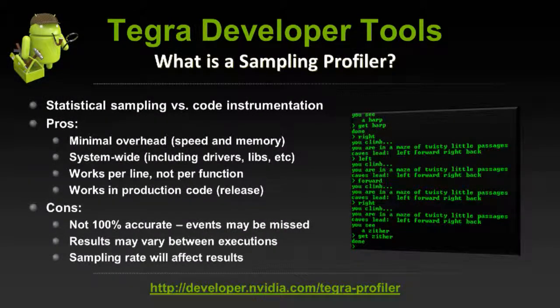The Tegra Profiler is a sampling profiler. A sampling profiler occasionally takes a peek at what's going on in your application. It has really low overhead — it won't cost much in terms of performance or memory. You can look system-wide, so you don't have to look at a single application; you can explore what's going on in DLLs, driver land, and third-party libraries. We're also looking at per-line granularity, so you can see on a given line in your code exactly how expensive it is — not just per function as you'd get from an instrumentation profiler. It also works on production code: as long as symbols are available, you can grab that information.